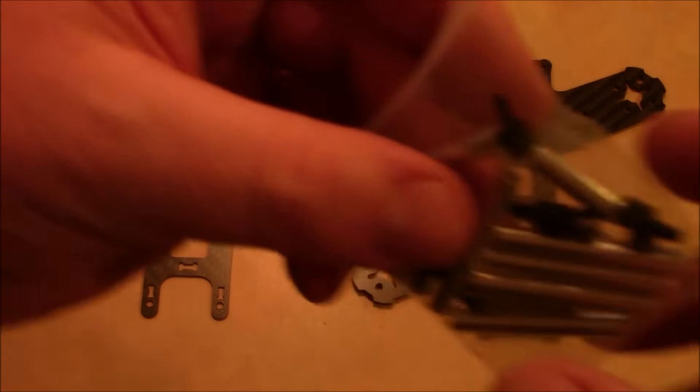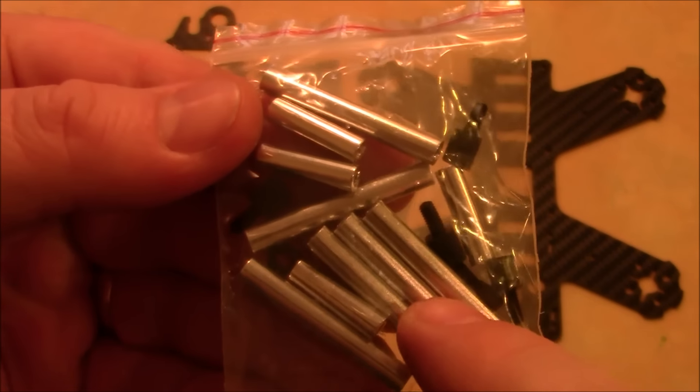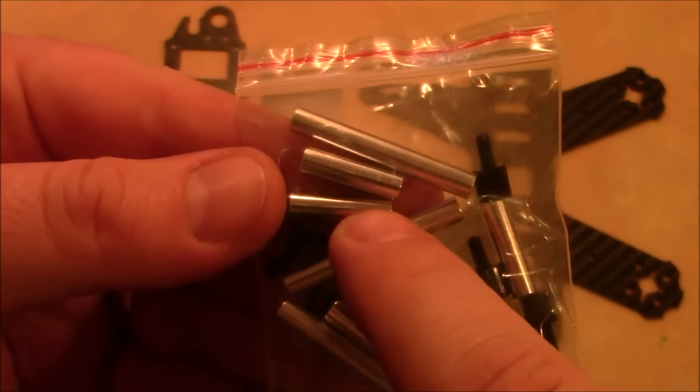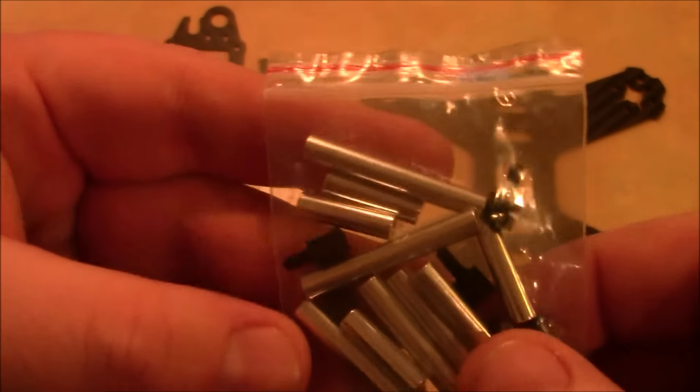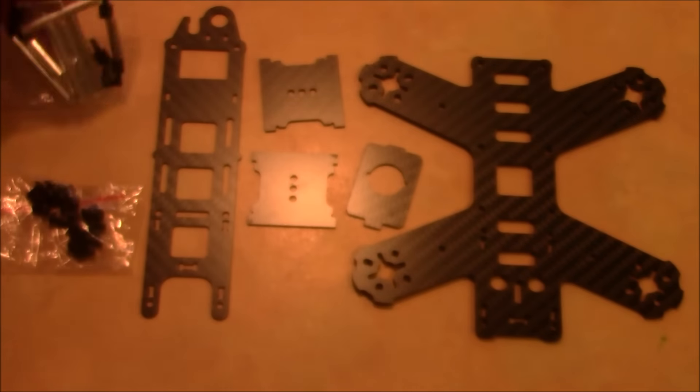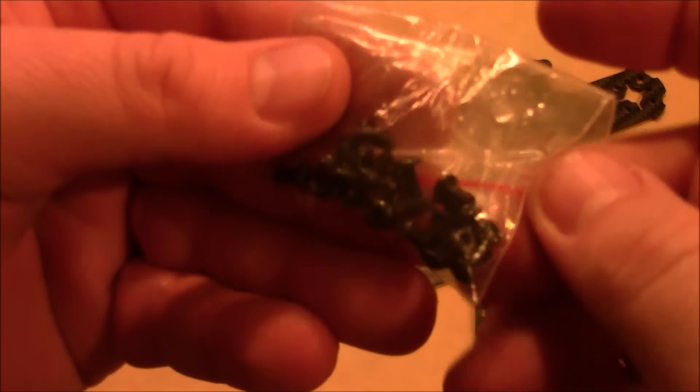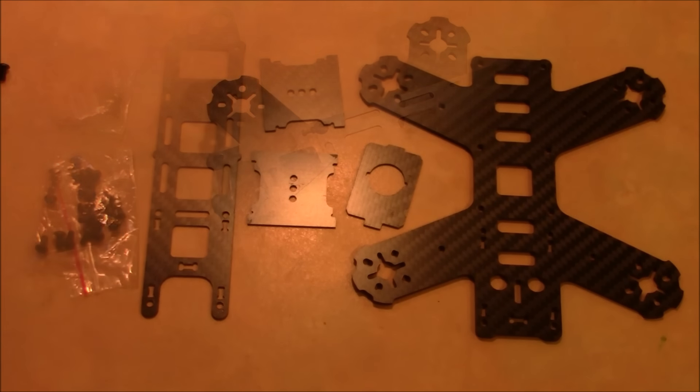Just like all the other Leesem quadcopters, it comes with the large spacers for your top and bottom plate spacing and the smaller ones for your landing gear. And this one has mounting stuff for a power distribution board, but doesn't actually come with one. And it also has the metal screws for putting it together. I'll get this thing put together and we'll see how it actually measures up.